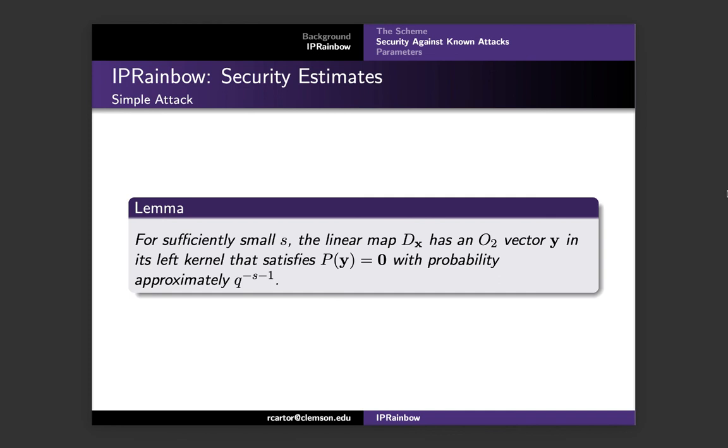The simple attack remains applicable to IP rainbow, but with some changes. For our new IP rainbow scheme, an oil vector in the kernel of d sub x may not necessarily be in the kernel of the public key. So given that the second layer maps contain a quadratic summand in s of the second layer oil variables, we expect the simple attack to proceed with probability roughly q to the negative s minus 1, or 1 over q to the s plus 1. This is the lemma that appears in our paper, and the corresponding proof is also found in the paper.